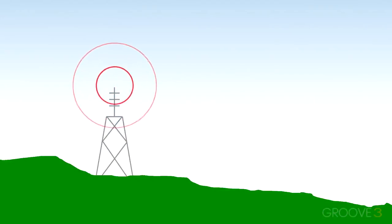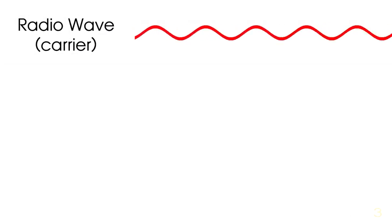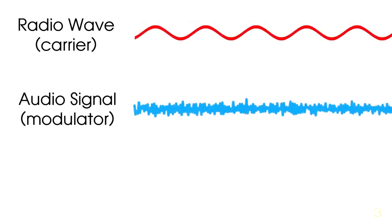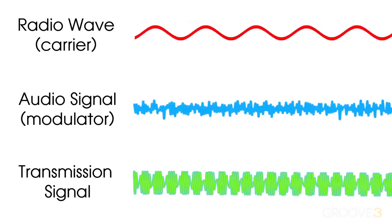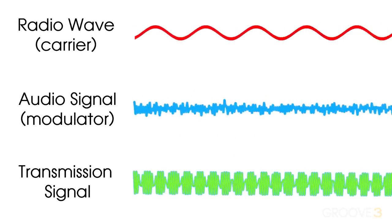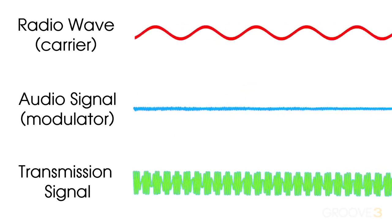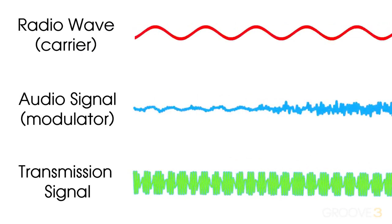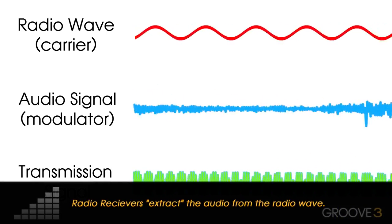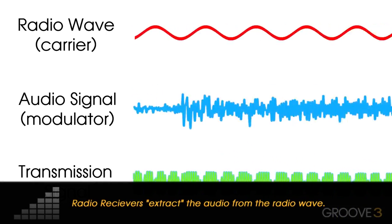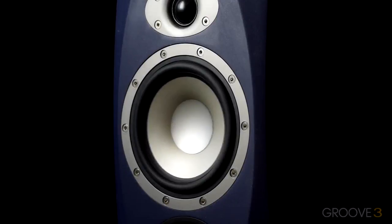Without getting too far into the specifics on how radio works, a radio wave is just a simple sine wave. The audio signal that we'll actually be transmitting over that sine wave is what modulates or changes the properties of that radio wave — basically encoding our audio onto that radio signal. Our radio receiver, like the one in our car, separates the encoded audio from the radio signal and then plays that audio back on our speakers.